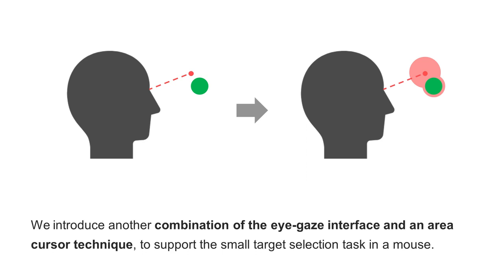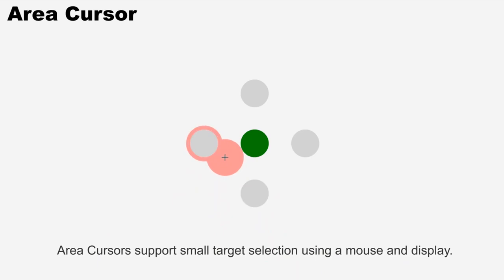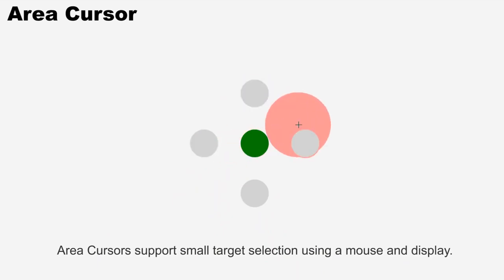We introduce a combination of the eye gaze interface and an area cursor technique to support the small target selection task in a mouse. Area cursor supports small target selection using a mouse and display.